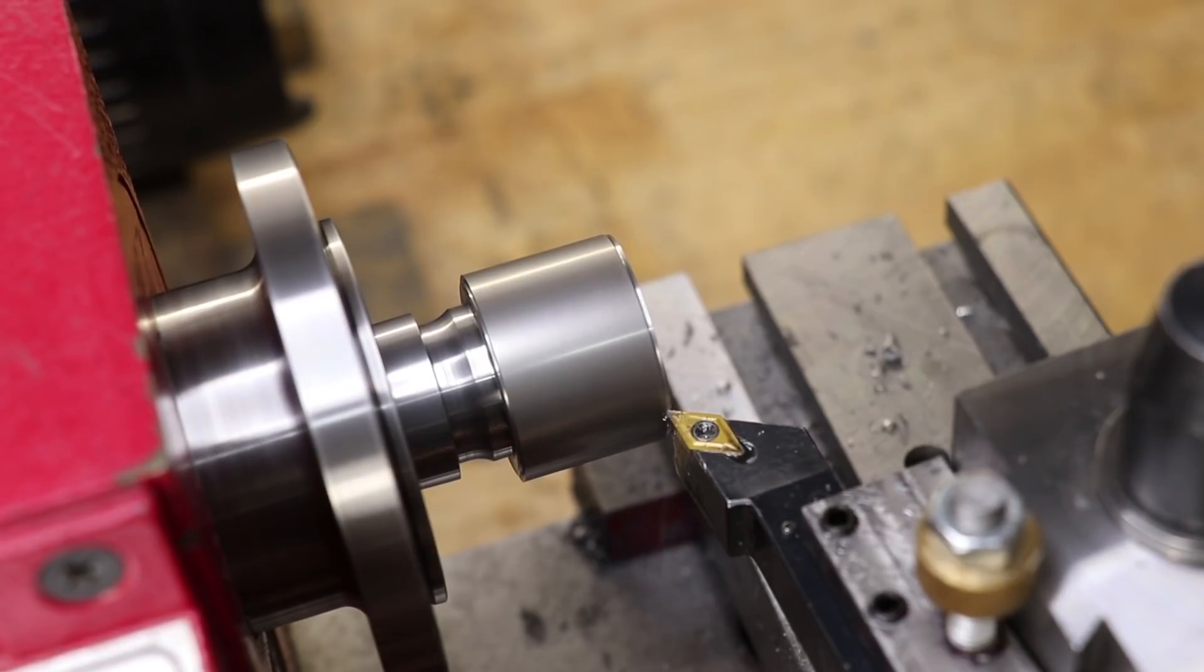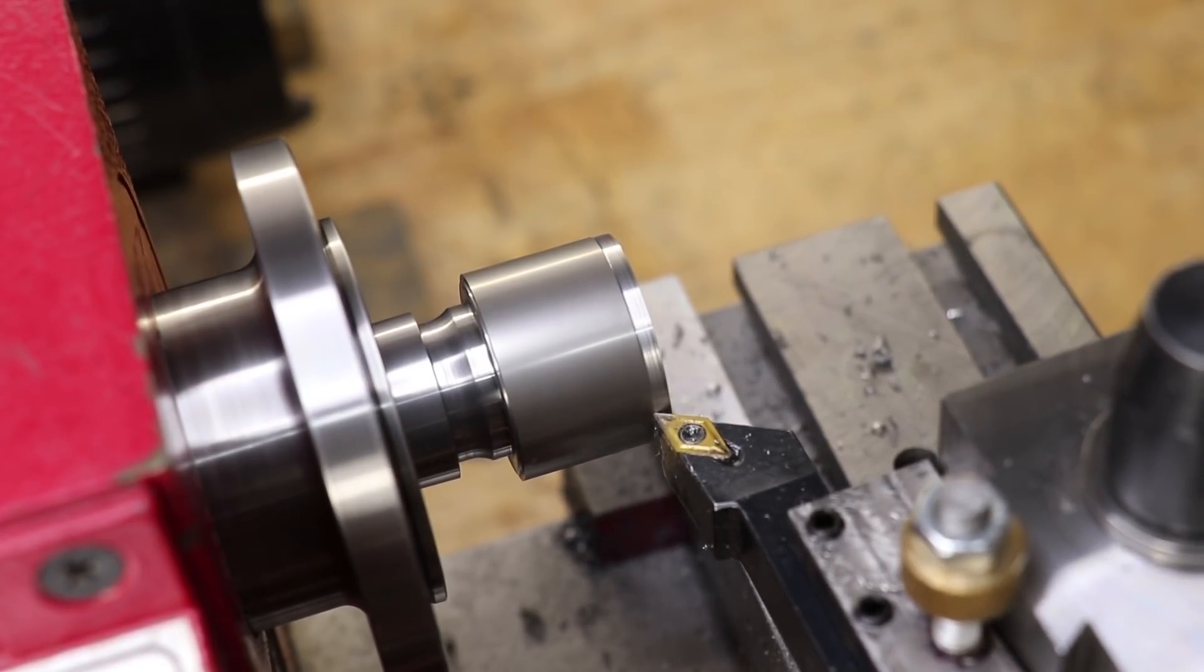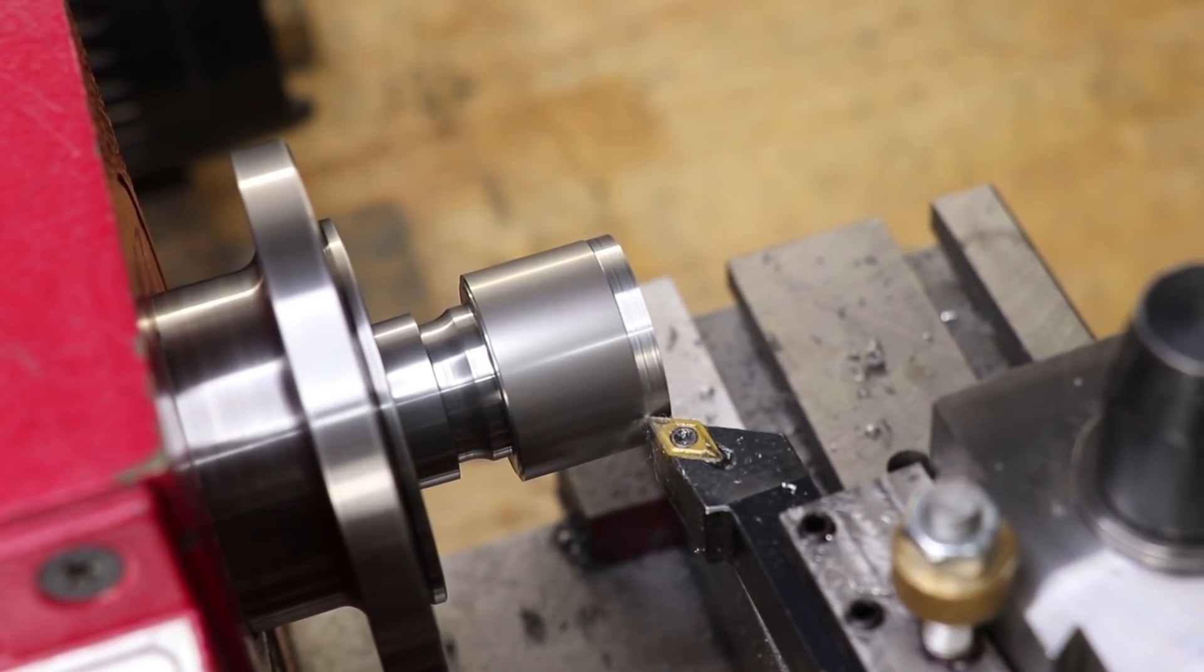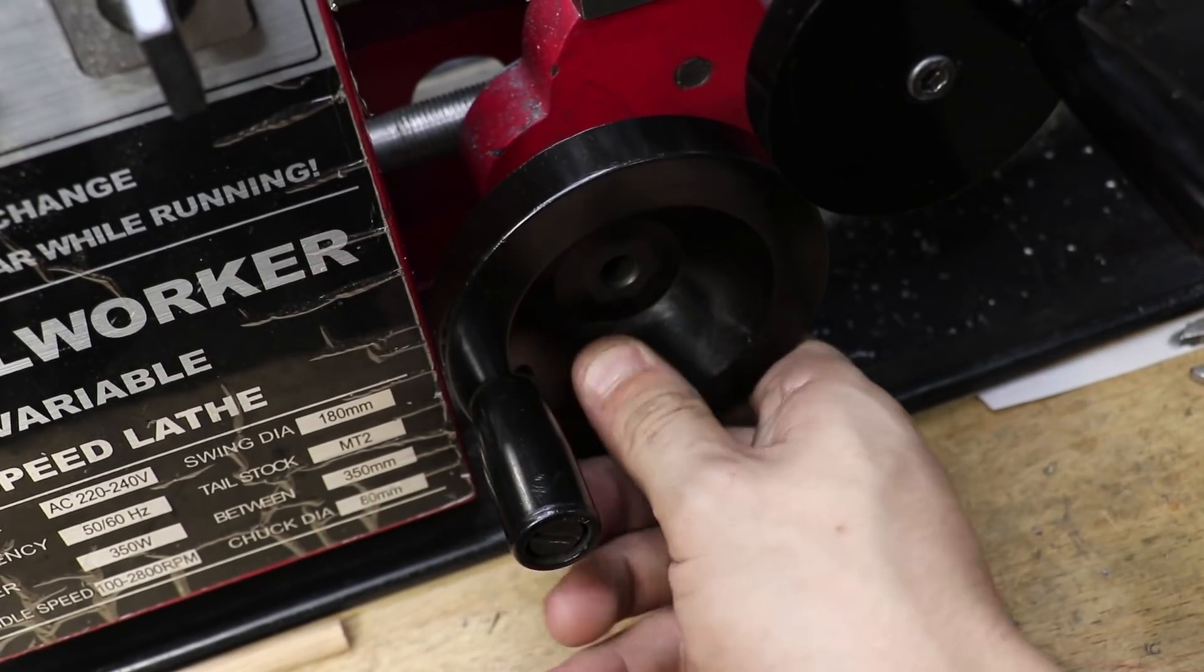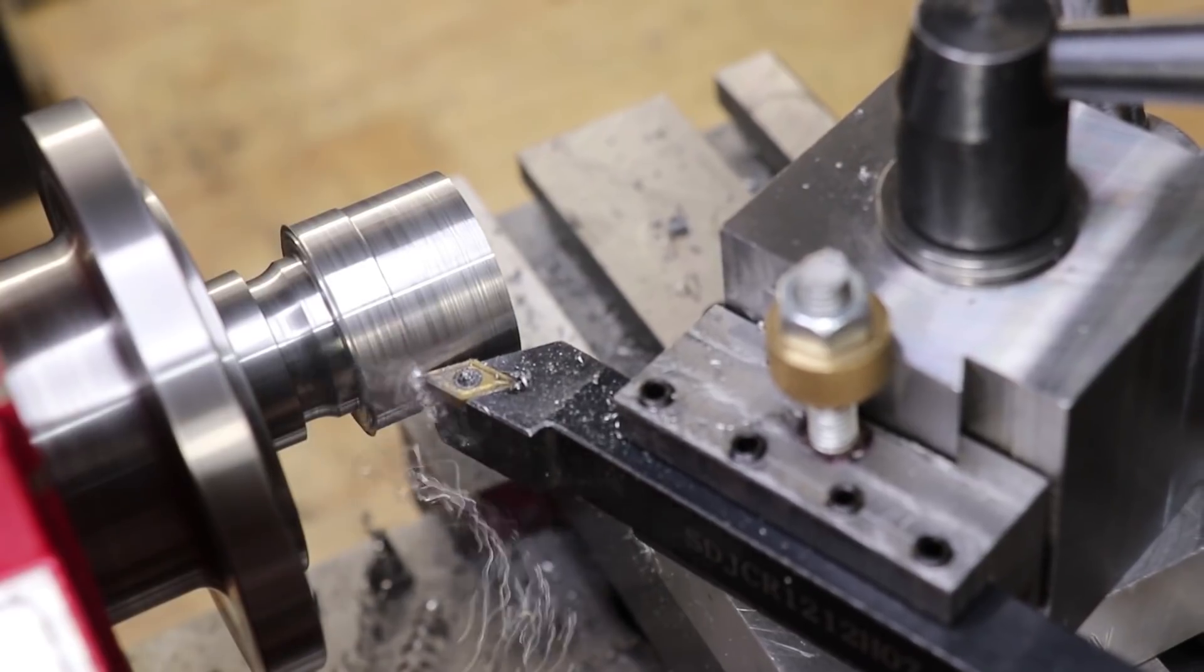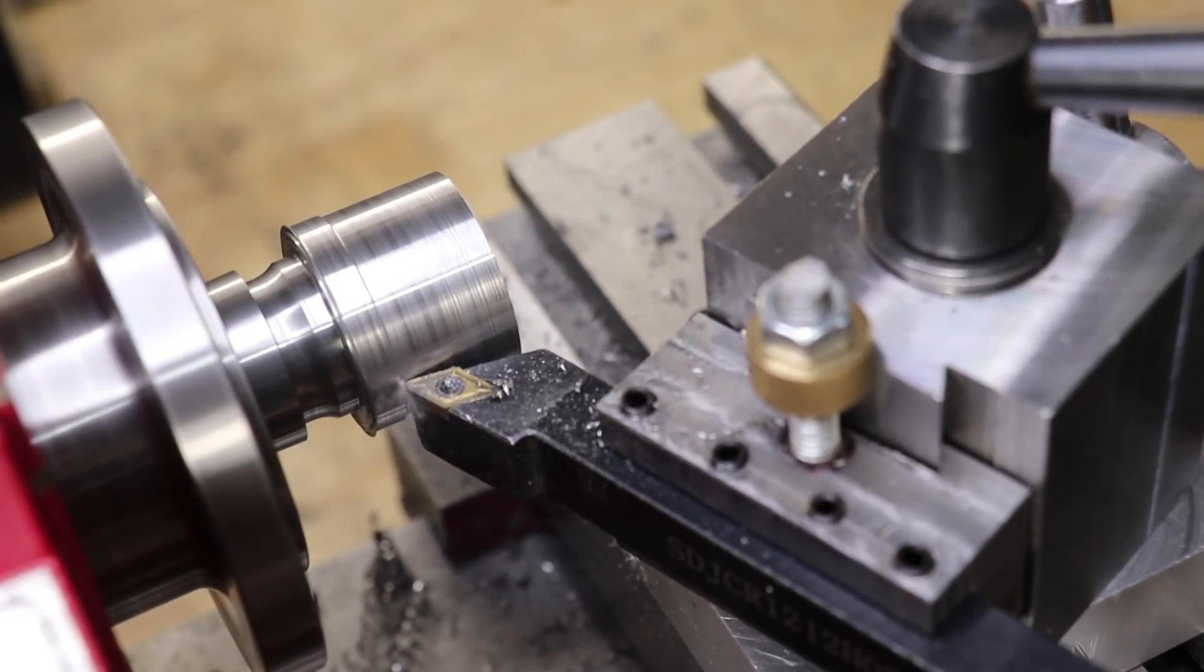Now one thing that I didn't account for is the fact that because the work is held further back, much closer to the headstock, the carriage handwheel was actually hitting the control box housing. So I ended up having to hold the tool holder at a 45 degree angle.